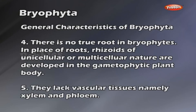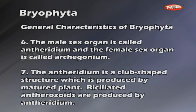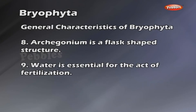There is no true root in bryophytes. In place of roots, rhizoids of unicellular or multicellular nature are developed in the gametophytic plant body. They lack vascular tissues, namely xylem and phloem. The male sex organ is called antheridium and the female sex organ is called archegonium. The antheridium is a club-shaped structure produced by the mature plant. Biflagellate antherozoids are produced by the antheridium. The archegonium is a flask-shaped structure.